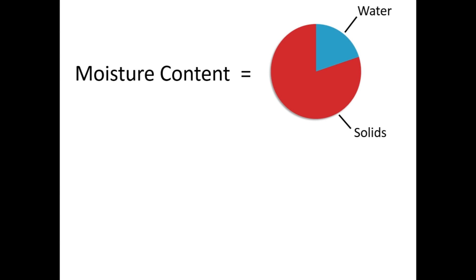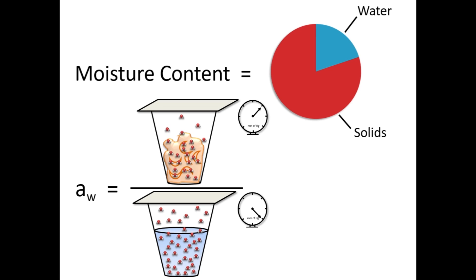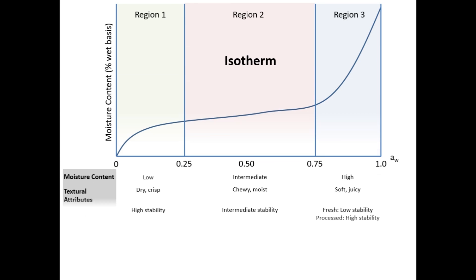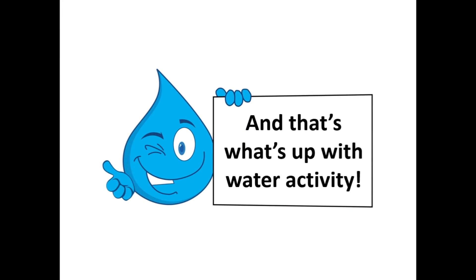So to summarize, moisture content is the amount of water in a food, while water activity is the ratio of the partial vapor pressure of water in a food to vapor pressure of pure water at the same temperature and pressure. We can relate the concepts of water activity and moisture content using a graph called an isotherm, which we divide into three different regions. Foods in each of these water activity regions have different moisture contents, textural attributes, and shelf lives. So while moisture content and water activity both relate to water in foods, they have different definitions and implications. And that's what's up with water activity!